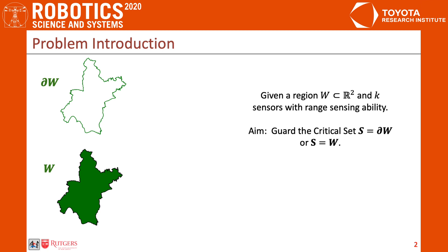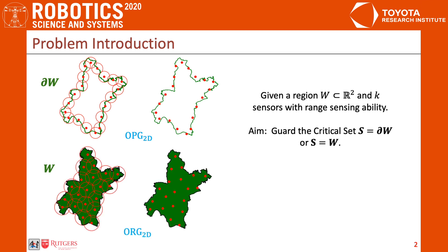We call the first problem of guarding the perimeter of the region the optimal perimeter guarding problem with 2D range sensors, or OPG-2D, and the second problem of guarding the region itself, the optimal region guarding with 2D range sensors, ORG-2D.